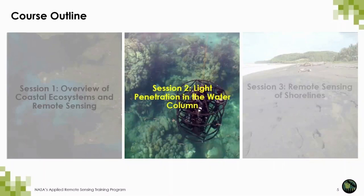Last week we presented an overview of major tropical and temperate coastal ecosystems and talked about satellite sensors typically used for analyzing these ecosystems. Today, we're going to talk about water quality and how the light regime is affected by the concentration of different constituents in the water column. We will also contextualize this information in retrieving benthic information from a coral reef in the Caribbean. Next week, we will present an overview of shorelines and how remote sensing and in-situ techniques can be complemented for mapping and analysis.